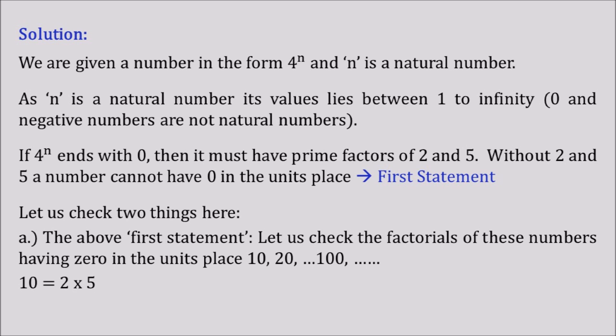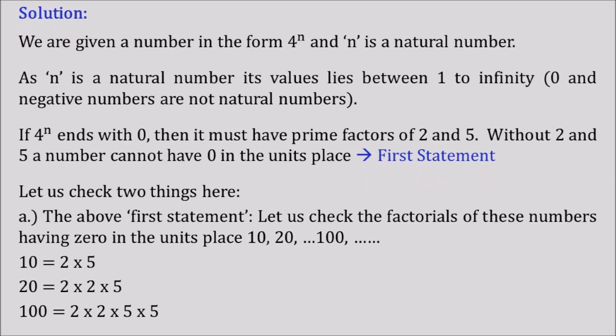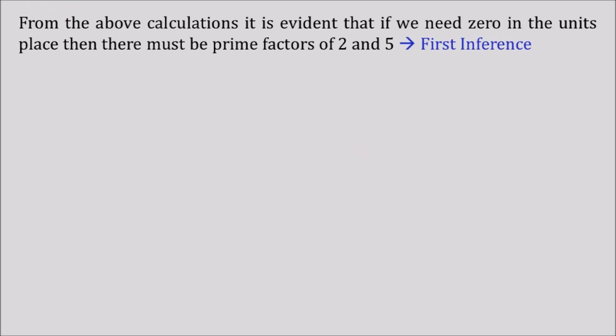Now coming to 10, we could see that the factors of 10 are 2 × 5. 2 is a prime number, 5 is a prime number. Moving ahead, 20 = 2 × 2 × 5. So again 2 is a prime number and 5 is a prime number. Similarly, if we factorize 100, we are also getting 2 × 2 × 5 × 5. So here 2 and 5, they both are prime numbers.